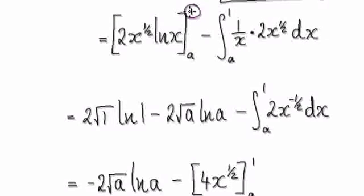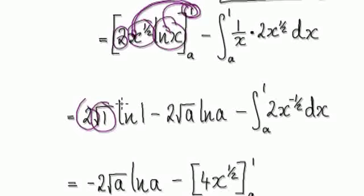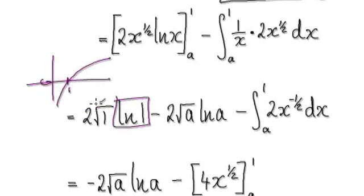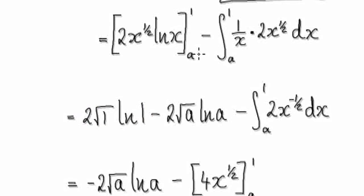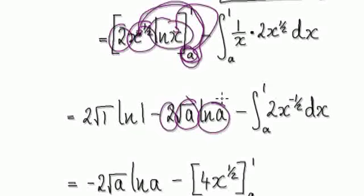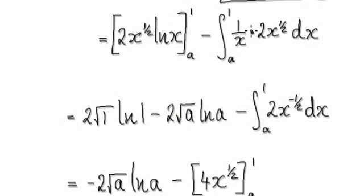When you integrate it from `a` to one it gives you this. Now let's evaluate — putting in the upper bound of one: the square root of one times two. Then natural log of one — remember, natural log of one is zero, so that block disappears. Then subtract: put `a` in to get square root of `a` times two, and natural log of `a`. Multiply through to the top and tidy up.